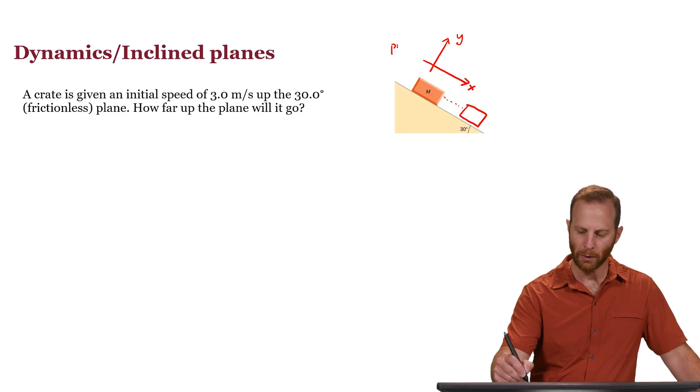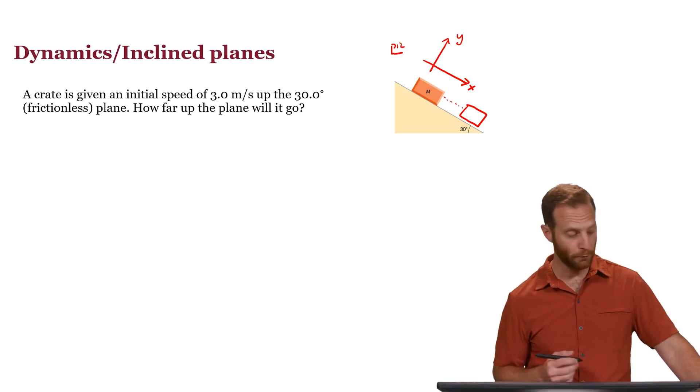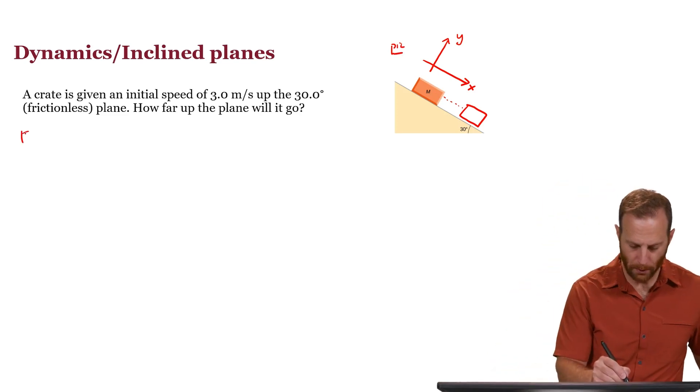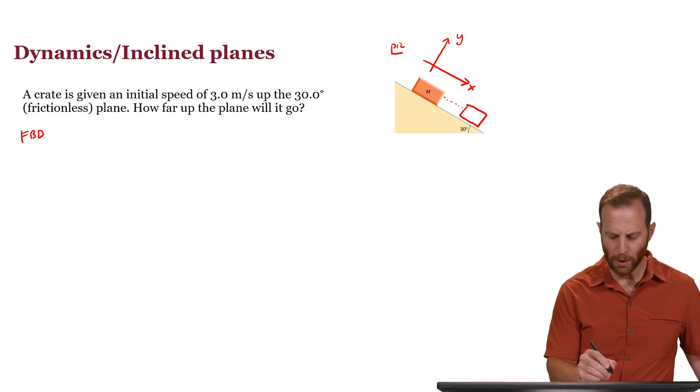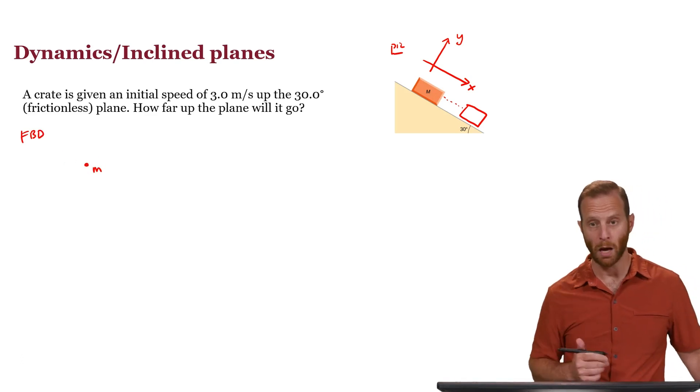Since we have a picture already, that's great. We're ready to draw a free body diagram. F, B, D. We'll do that by representing the dot, representing the block or the crate.